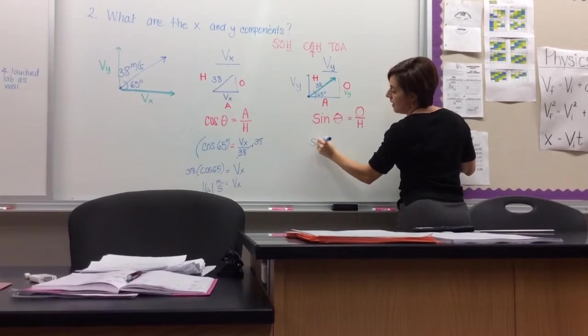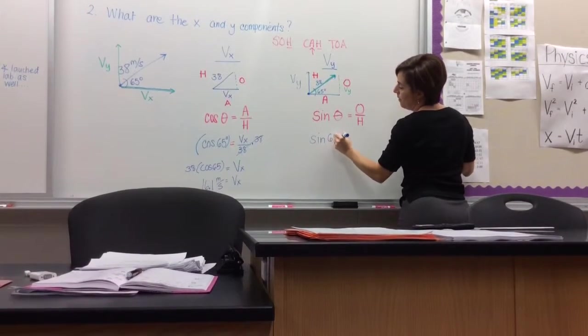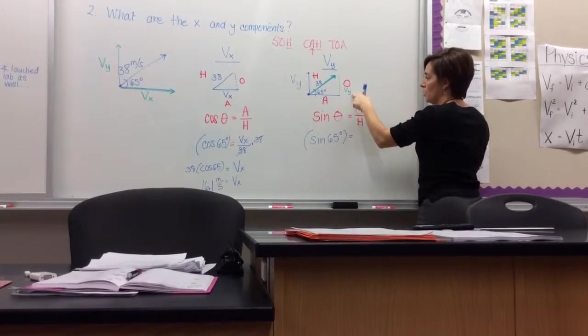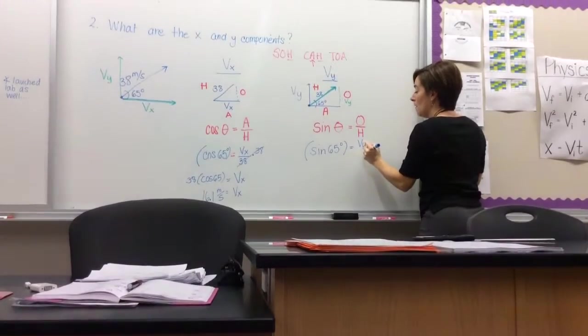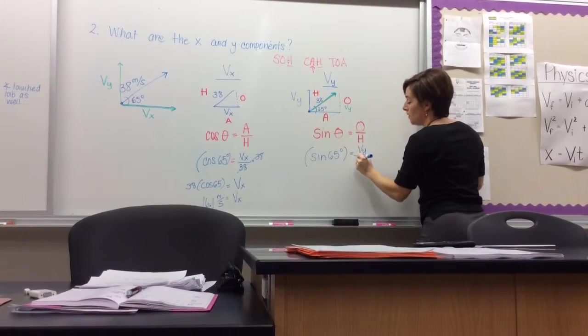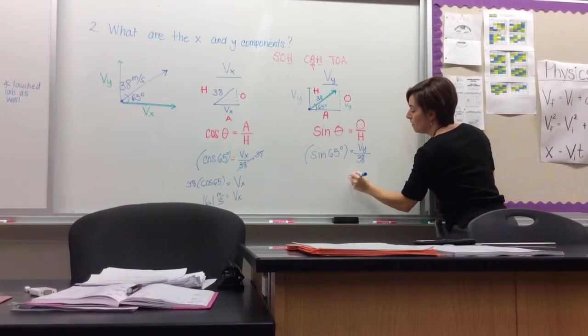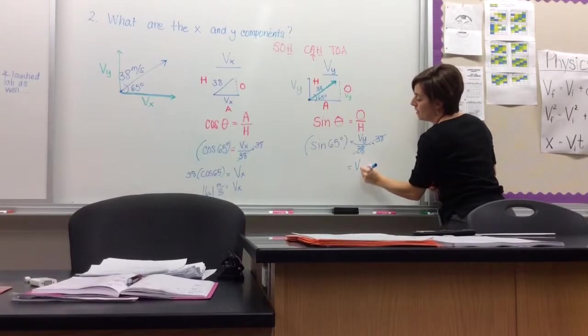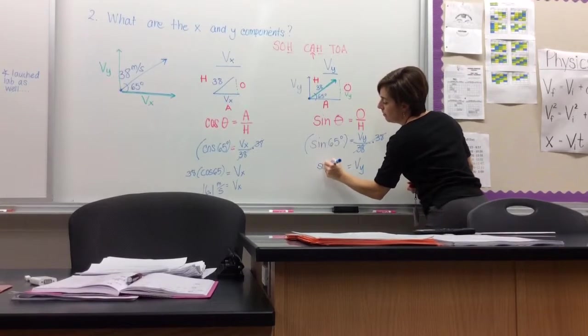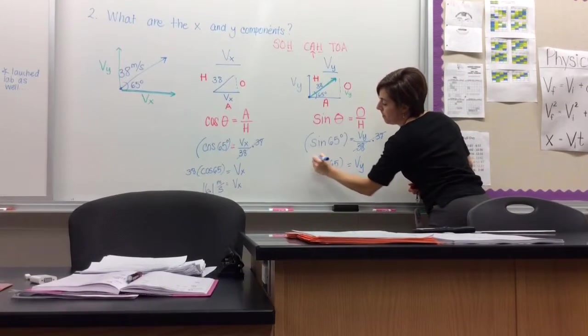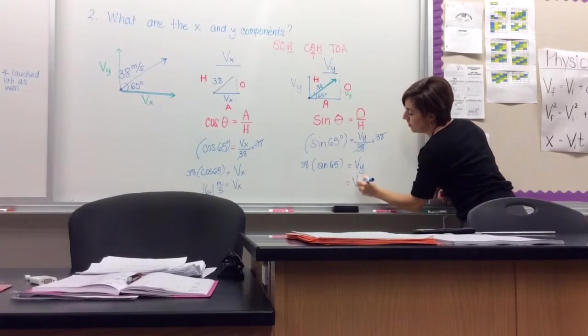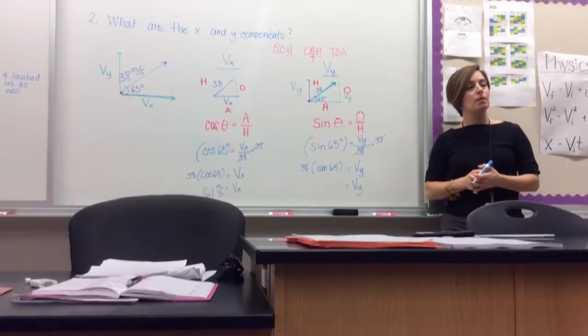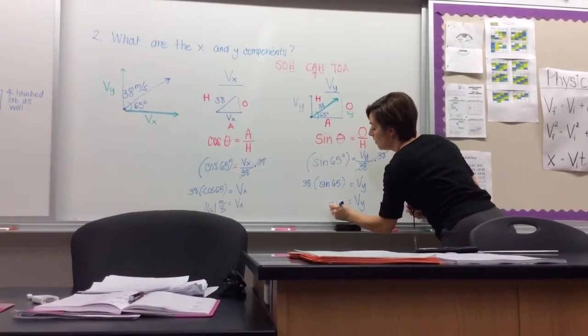So then again, I'm going to take sine of 65 is equal to the opposite, which is my velocity in the y, all over the launch speed of 38 meters per second. I want y by itself, so I'm going to multiply by 38. And what you do to one side, you have to do to the other. So vy equals, let me come up with it, 34.44, 34.4. Let's call it 34.